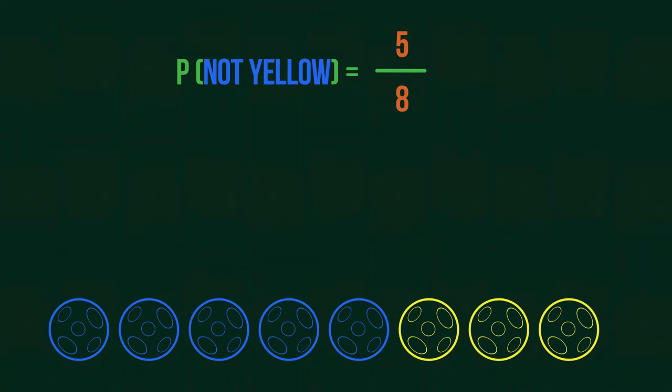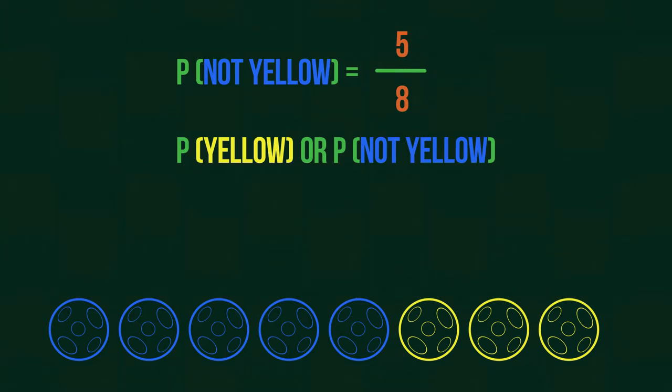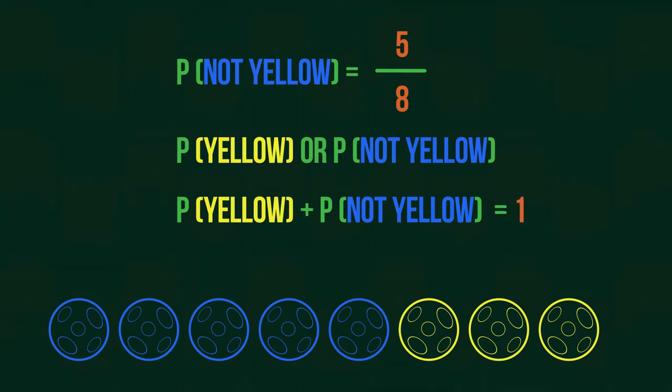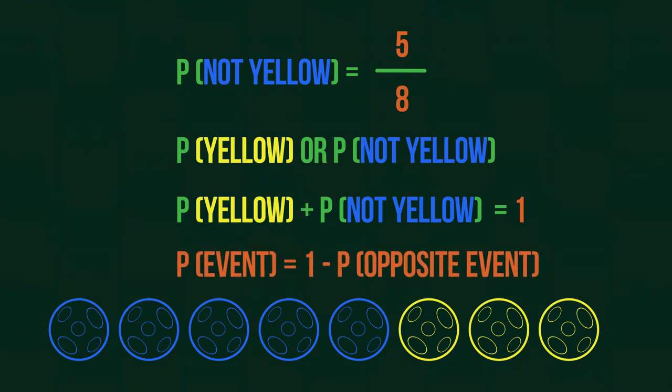We know that one event will certainly occur. We will either get a yellow ball, or we will get a ball that's not yellow. One or the other is definitely happening. That's why the sum of their probabilities has to be 1. As a result, the probability of getting a non-yellow ball is equal to 1 minus the probability of getting a yellow ball. We can use the same trick every time we have opposite events.